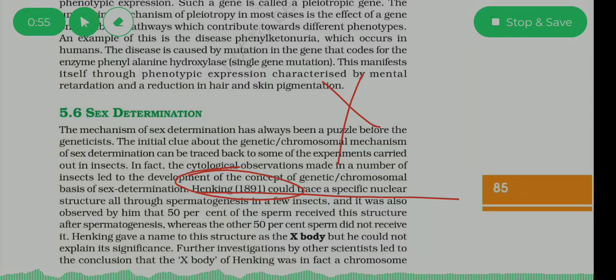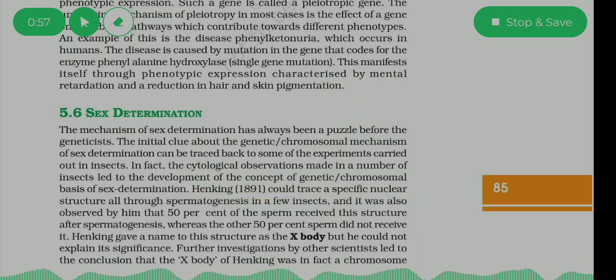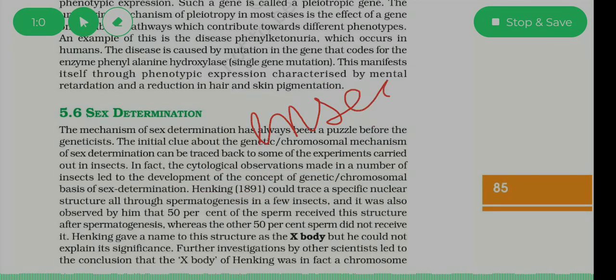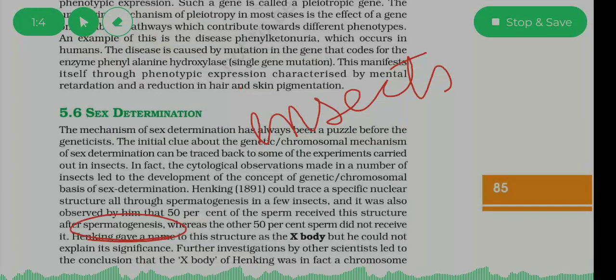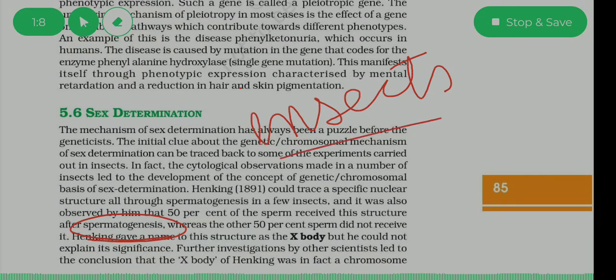To usse ni kya dekha tha, jab spermatogenesis ho raha tha, woh apna experiment karra tha insects pe. Spermatogenesis kya mtlb hota hai - formation of gametes, jab sex cells ban raha thae, kis me eek insect me.